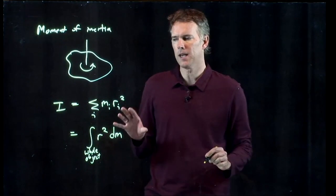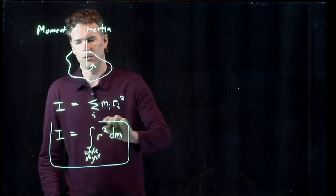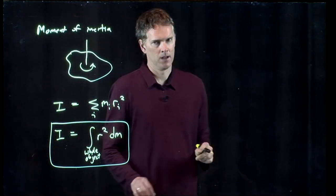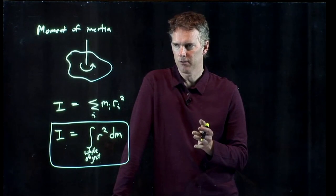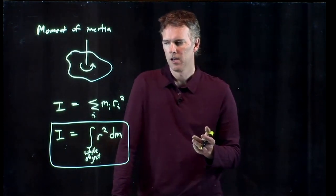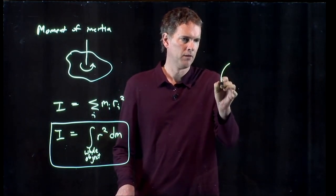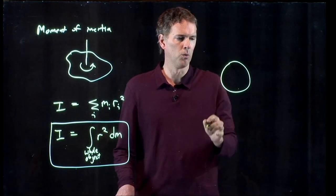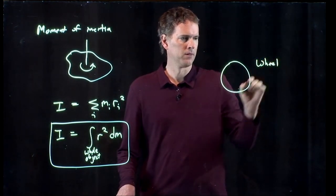Okay? So in general, this is how you calculate moment of inertia. You have to do an integral. And if you do that integral for different objects, you can figure out what the moment of inertia is. And there's some fairly straightforward examples. For instance, let's do the wheel.